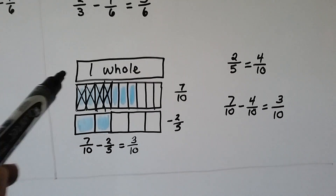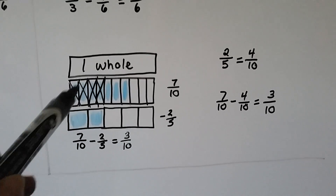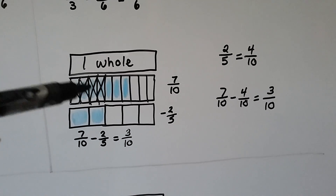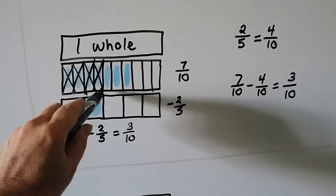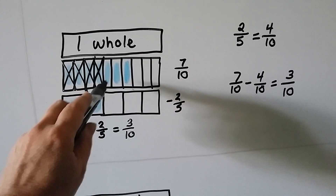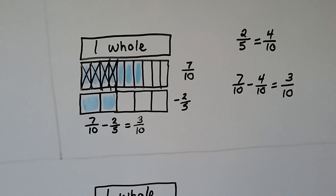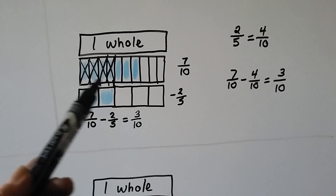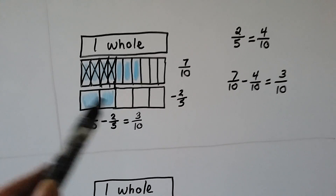Here's a whole one. If we have seven-tenths — this is split into tenths and we had seven of them — and we want to take away two-fifths, this bar is split into fifths. The two-fifths lines up with the four-tenths. The only thing that's left out of the seven-tenths is three tenths. So seven-tenths minus two-fifths is three-tenths. This two-fifths is the same thing as four-tenths. Seven-tenths minus four-tenths is three-tenths — it's just a different fraction bar broken up differently.